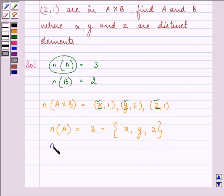Whereas, number of elements in set B are given to us as 2 and if you carefully analyze we have 1, 2, 1. So, we have 1, 2.